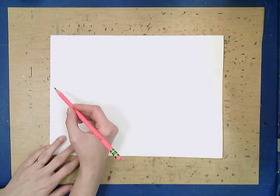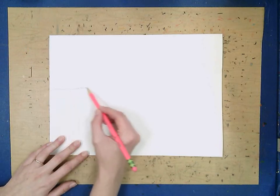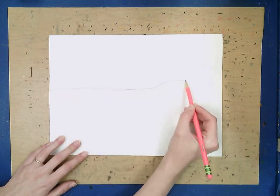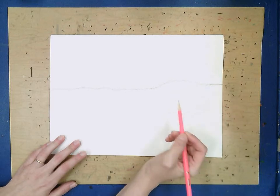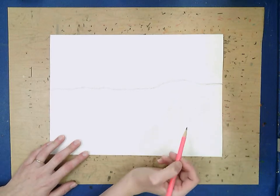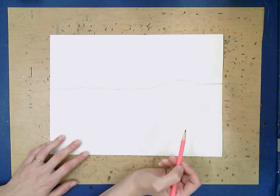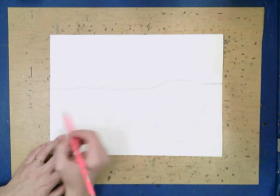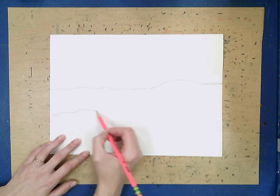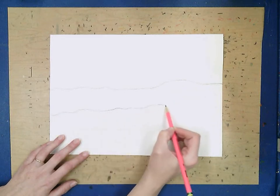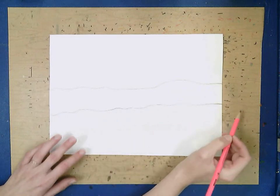We're going to start with the branch that the iguana is sitting on, so you want to start by just very lightly drawing two lines across. Now remember, it's a branch, branches are not really very straight, so make it kind of wobbly, don't make it super neat.